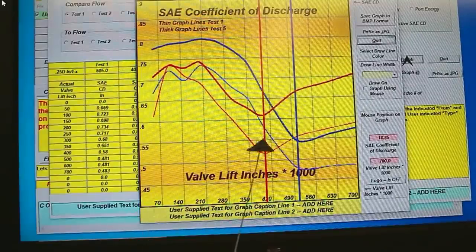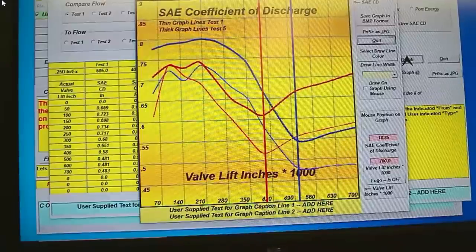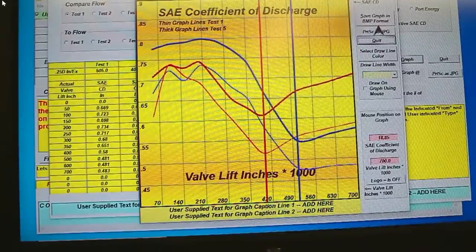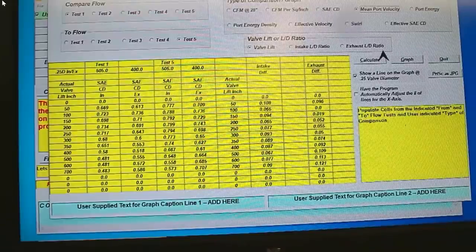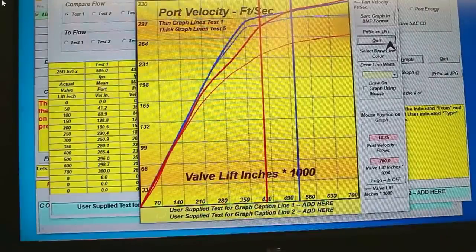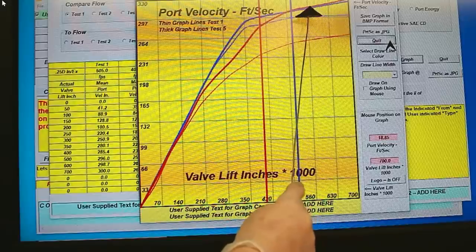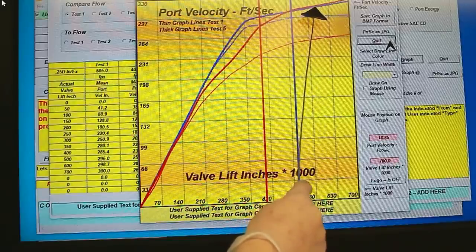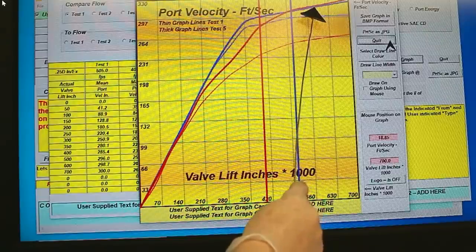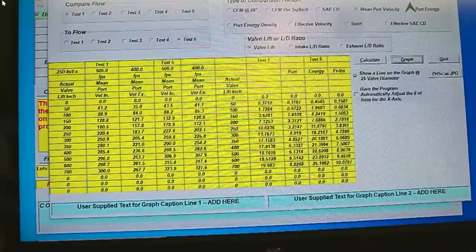Look at this. This is why we're doing so well here. Efficiency of everything has gone up a bunch. Now let's look at the mean port velocity before and after. And what we have here is all that extra flow plus we are over the magic 300 feet per second at the valve lift we're going to use. I think we're about 306 on both intake and exhaust. So we've scored well on that. Now let's have a look at the port energy.